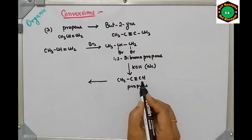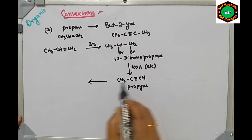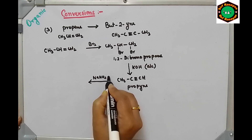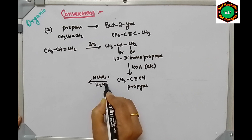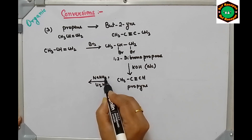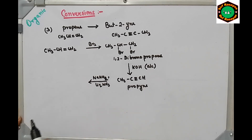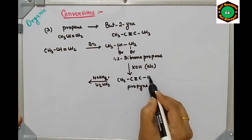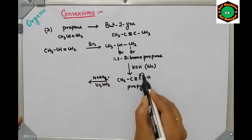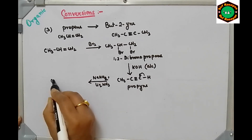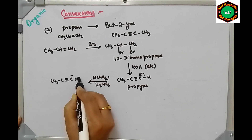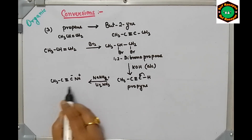You know that triple-bonded carbon is electronegative because it is sp-hybridized. So in presence of a strong base like sodamide (NaNH2) in liquid ammonia, this base will abstract the terminal proton and it will form CH3-C≡C⁻ Na⁺, which is sodium acetylide.